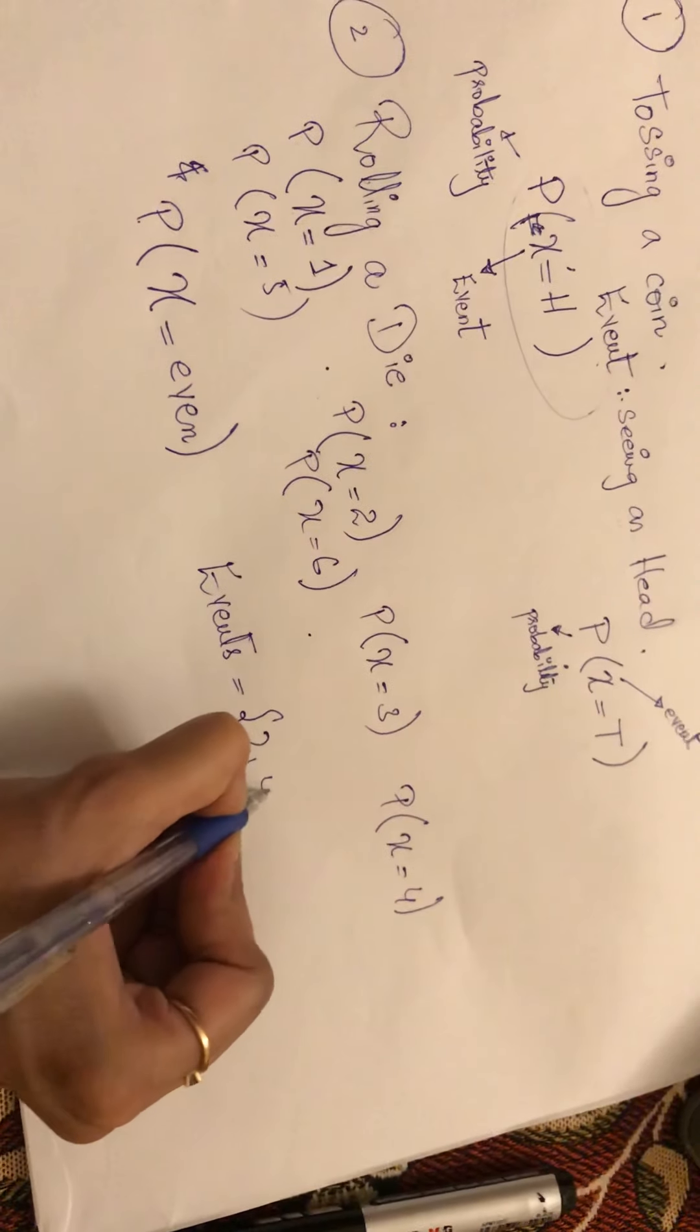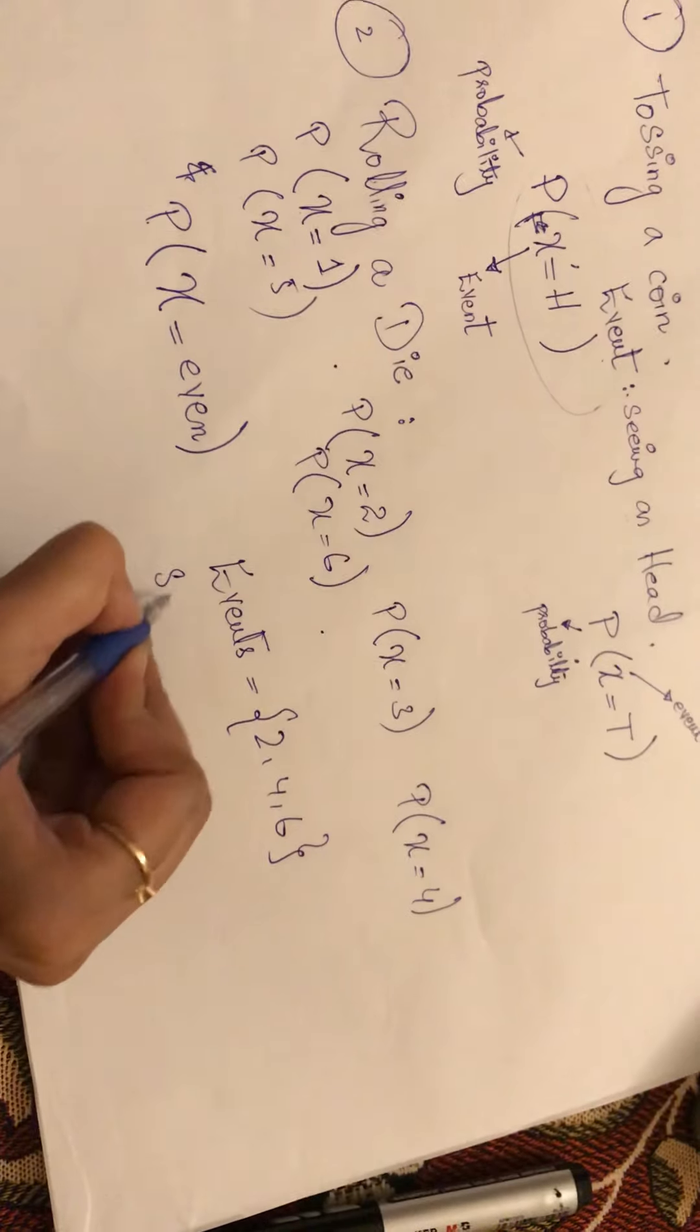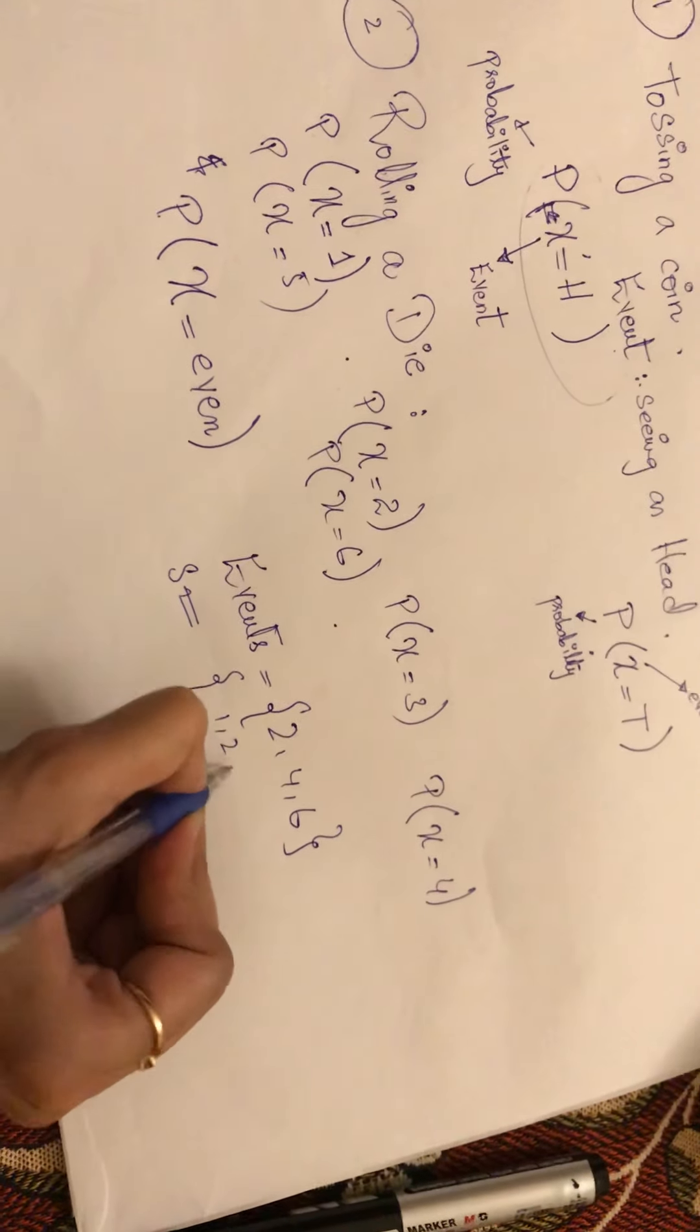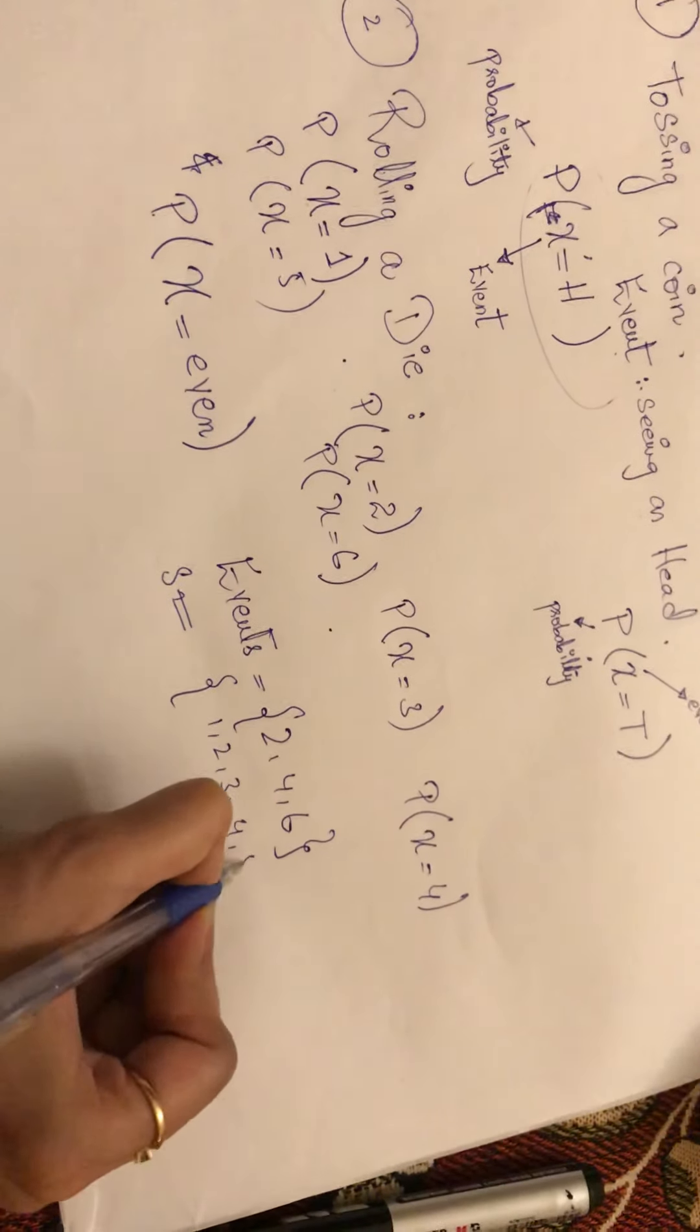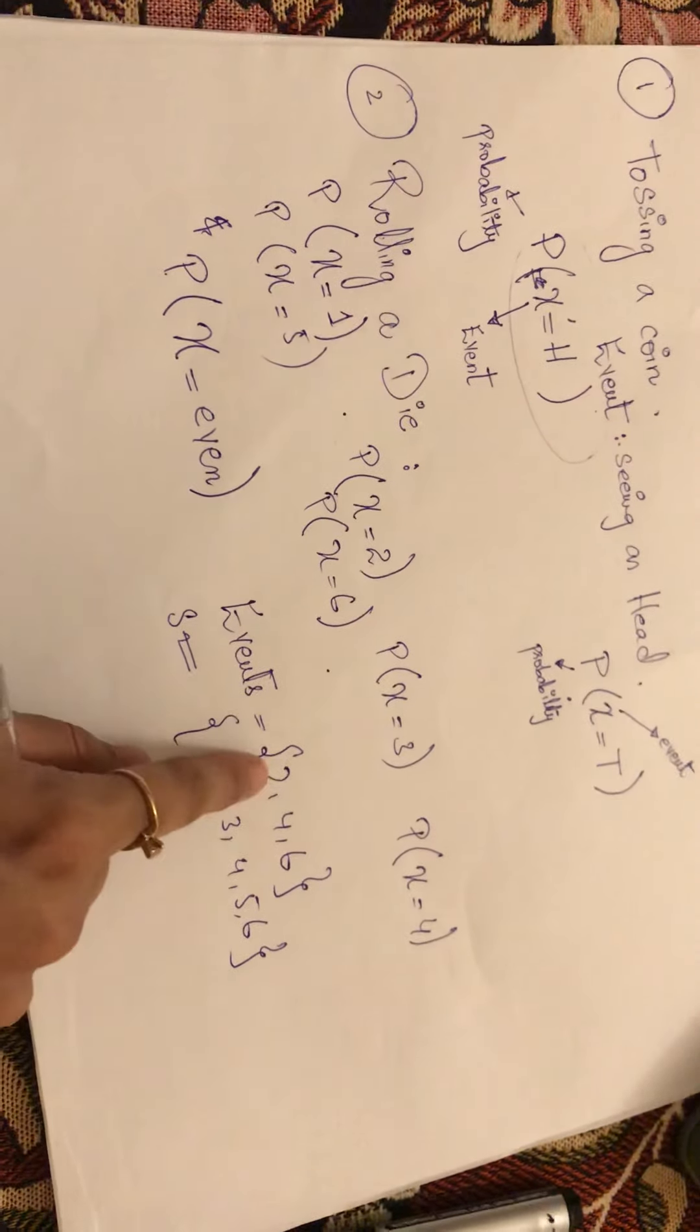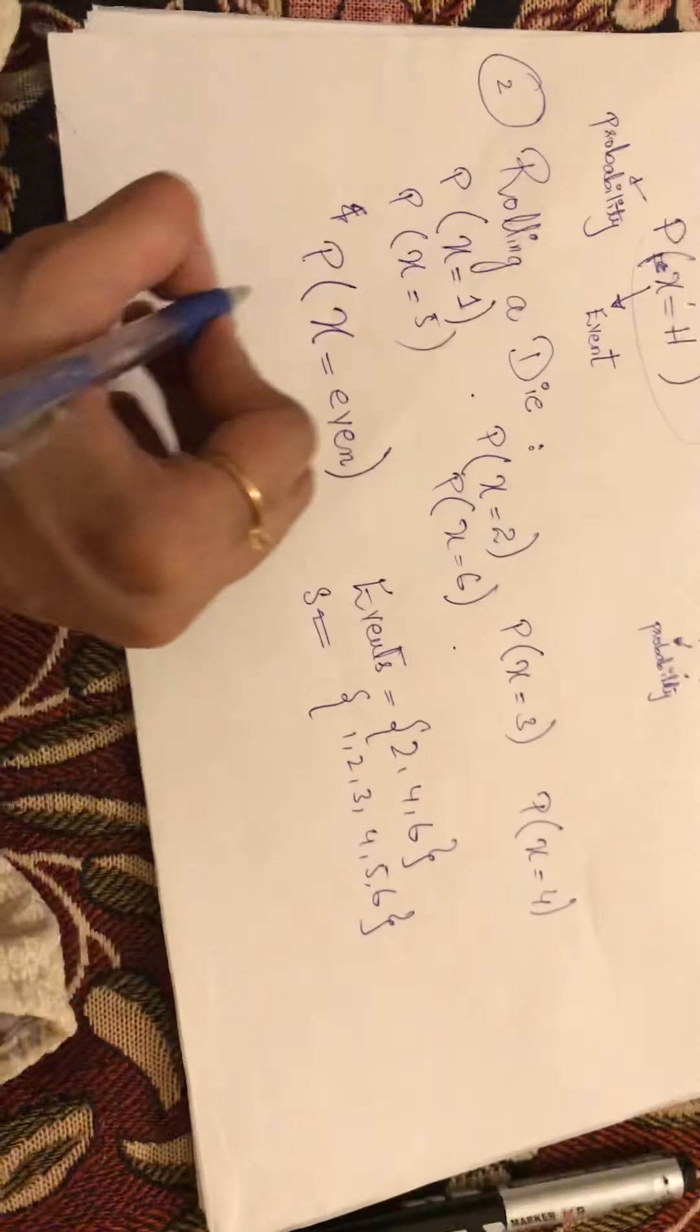So the events are two, four, six. Sample space is always signified by this S. What is your sample space? One, two, three, four, five, six. So out of this sample space, the events are two, four, six.